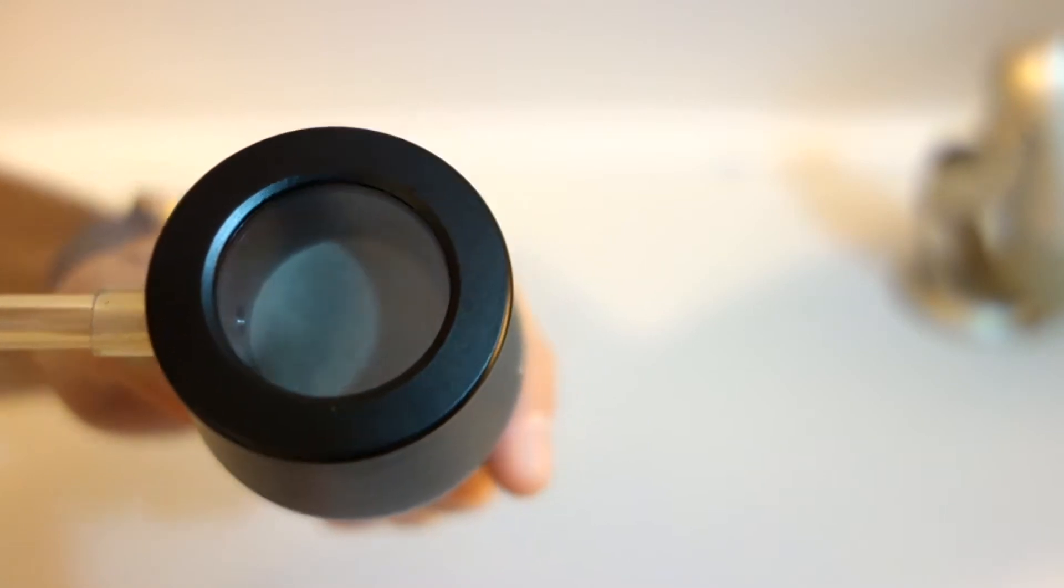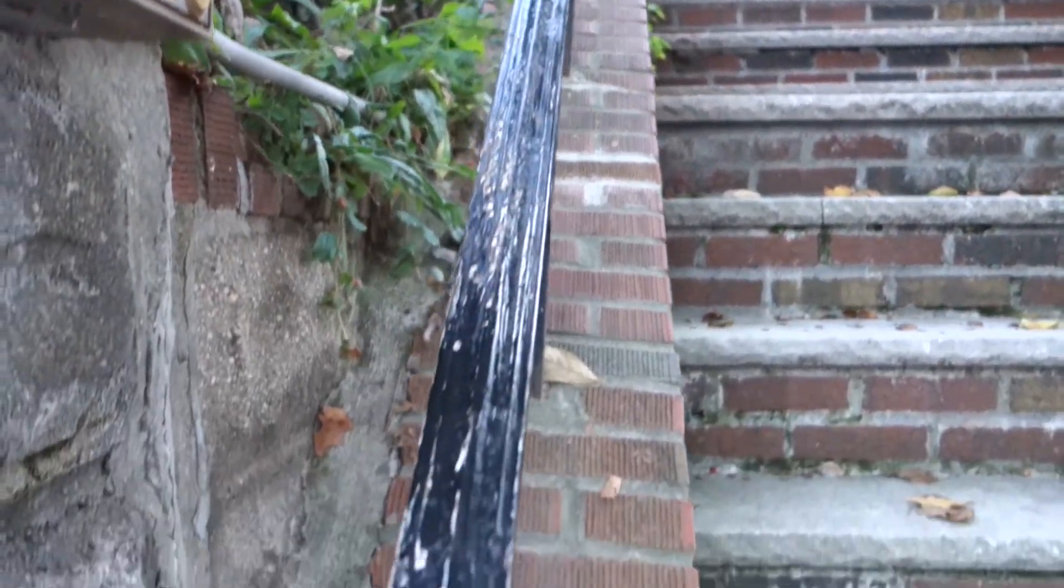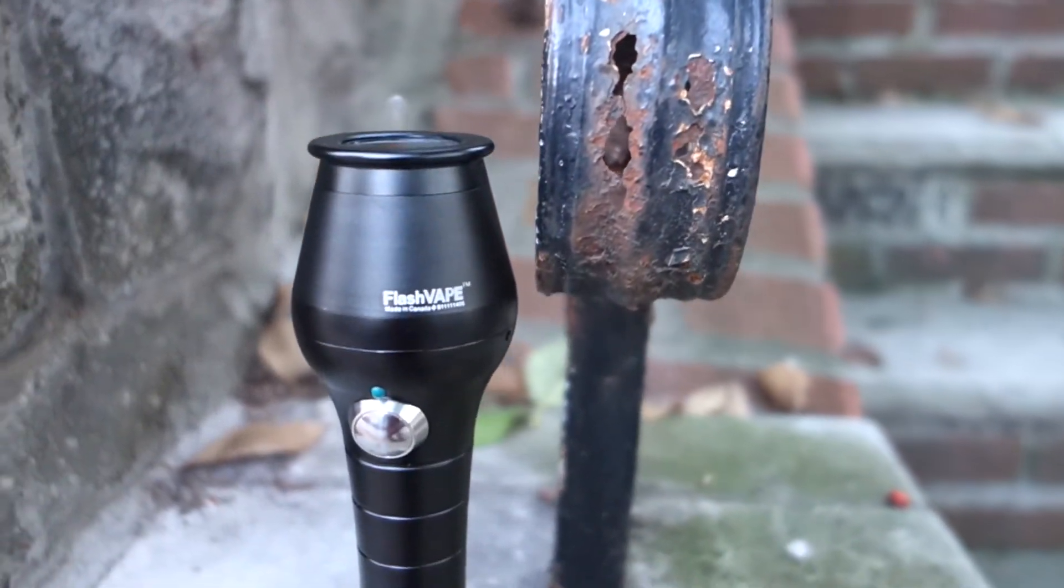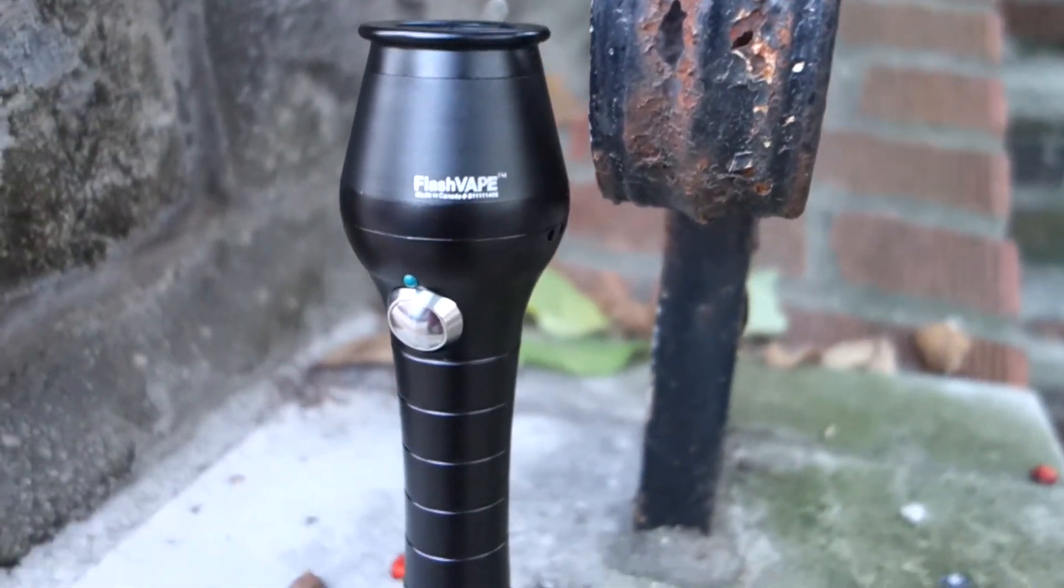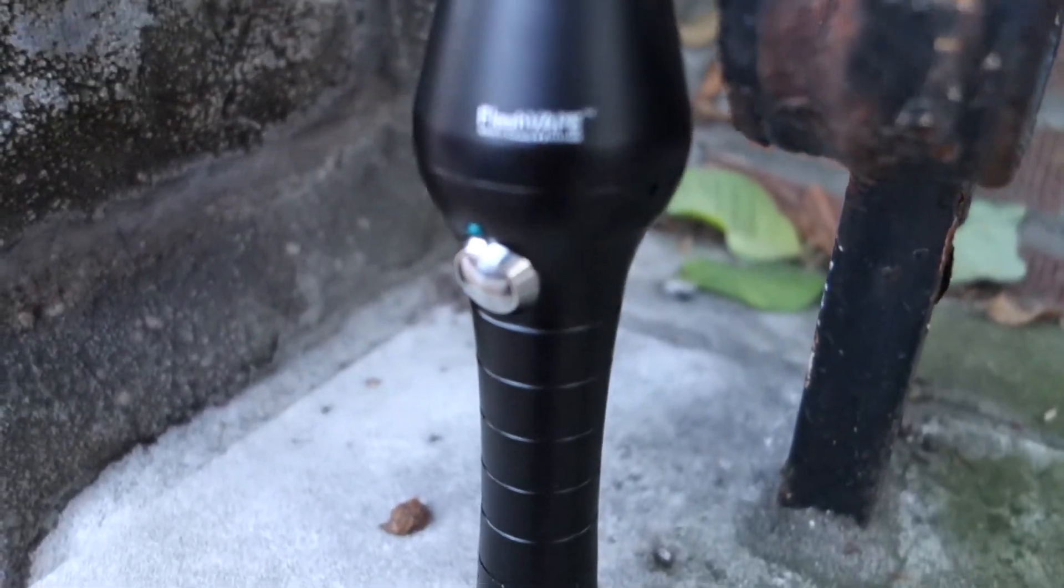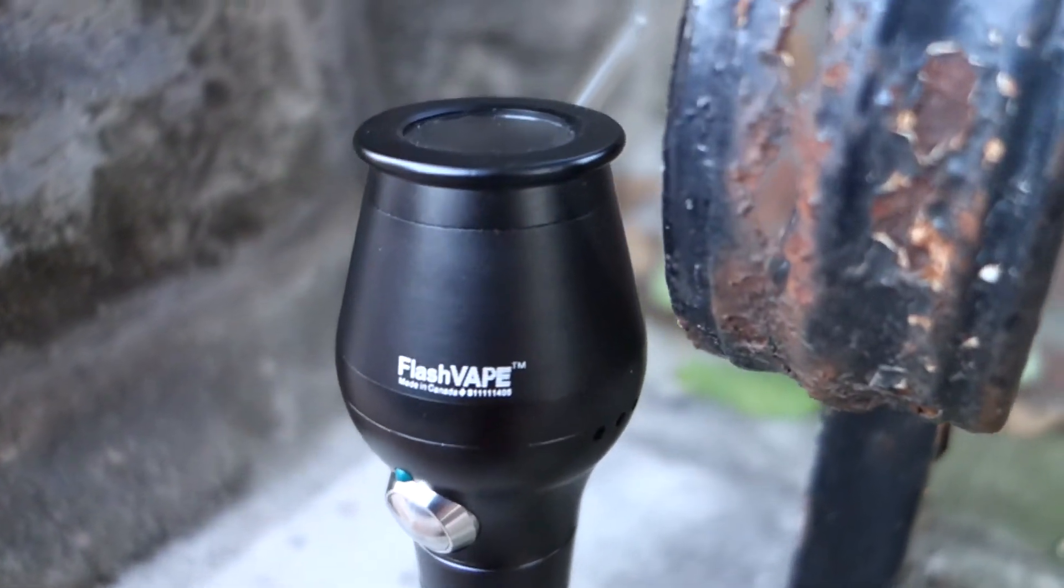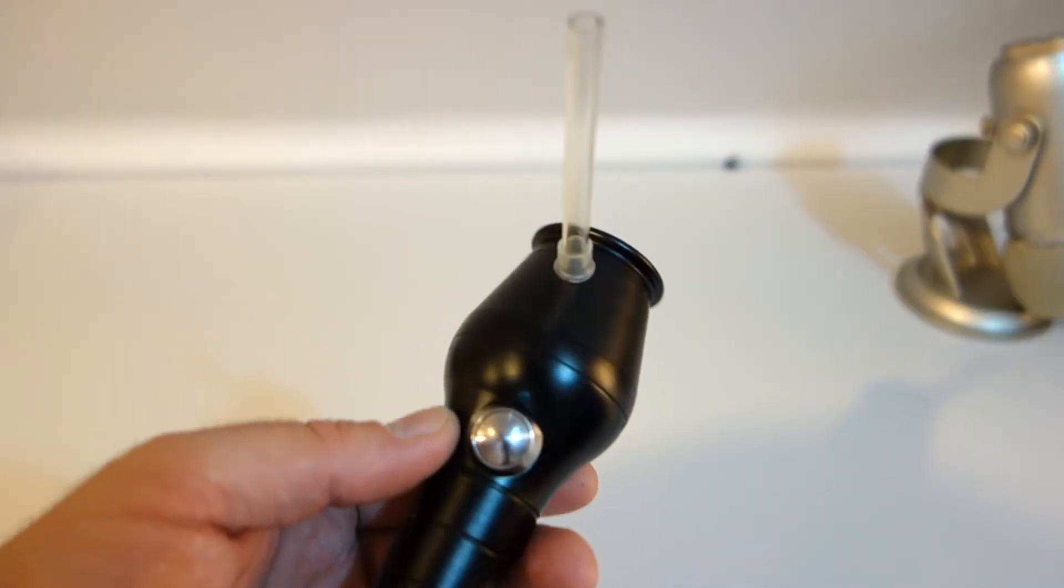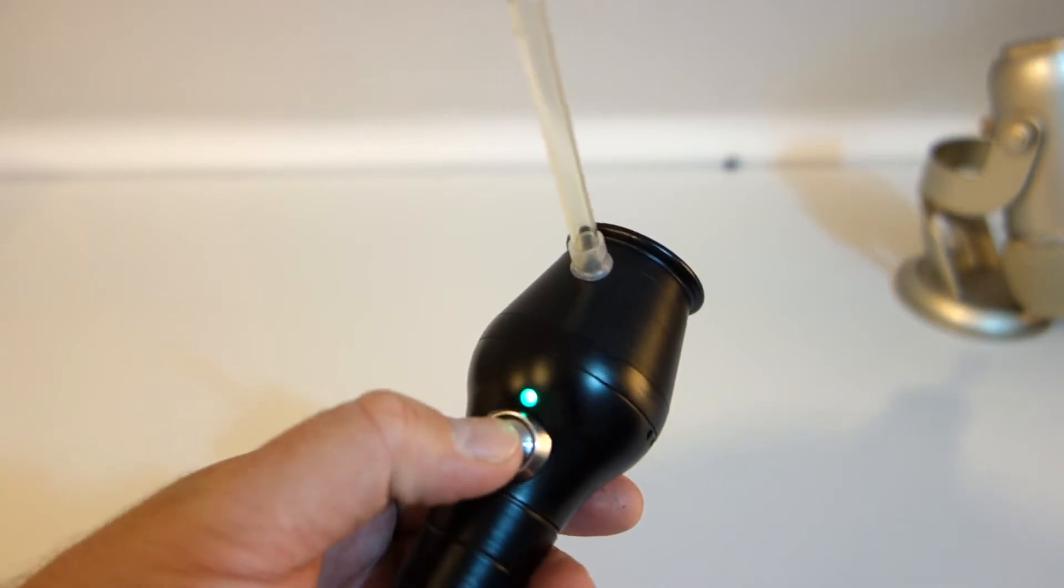Unlike most other vaporizers, the FlashVape doesn't have a display or any way to set a specific temperature. Instead, you have full control over the heating chamber by pressing and releasing the power button on the front. Having this type of control means you can fine tune your sessions as well as instantly disengage the heating element right after draws which will ultimately save you battery as well as save your material for further vaporizing.